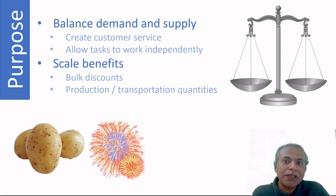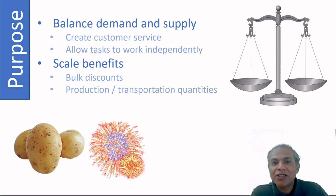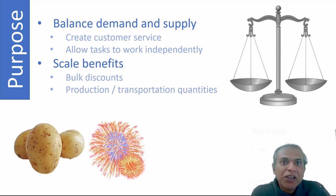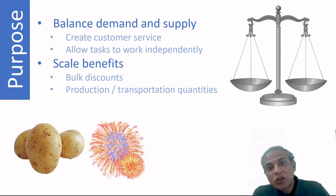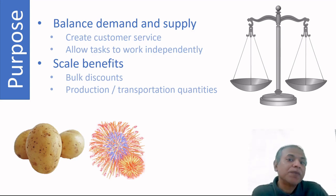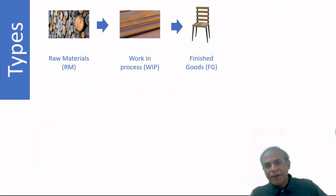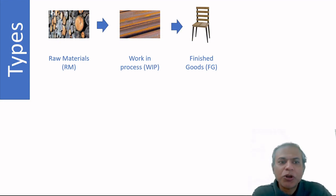Besides decoupling, inventory also provides scale benefits. We can get bulk discounts, produce in larger quantities with bigger factories that give economies of scale, use automation to reduce operational costs, and ship with full truckloads. As a general rule, full truckload rates are better than less-than-truckload rates, so larger quantities bring transportation costs down.